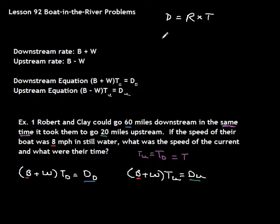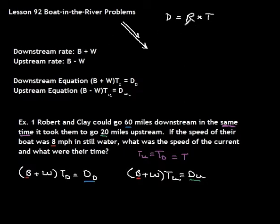When we have boats in rivers, we have a current. When the boat is going downstream, you add on — this is the rate of the boat, and the rate of the current is pushing it. So the rate downstream is going to be the rate of the boat plus the rate of the current.